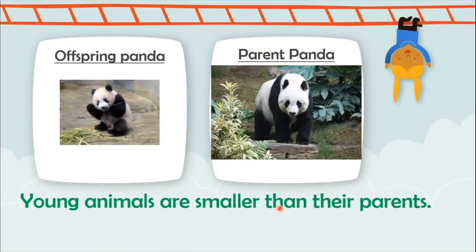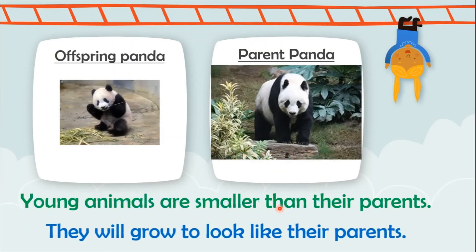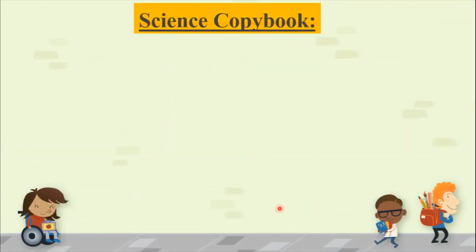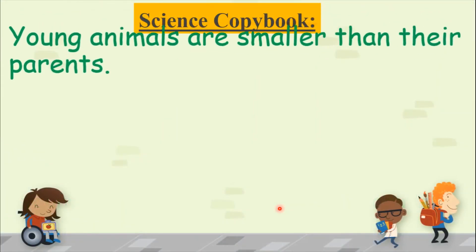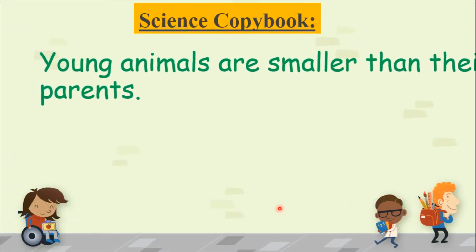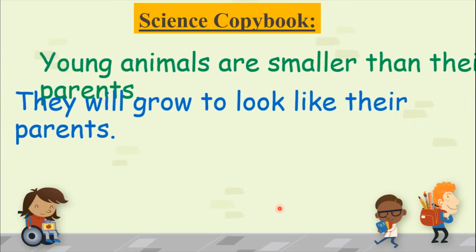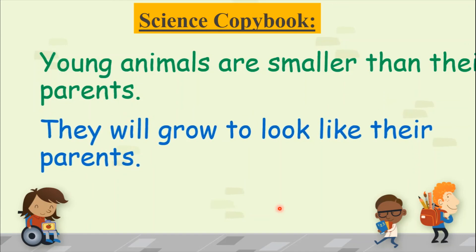Young animals are smaller than their parents. They will grow to look like their parents — the offspring is going to grow to look like its parent. We wrote in our science copybook: young animals are smaller than their parents; they will grow to look like their parents.